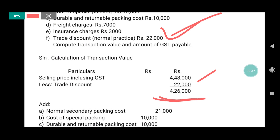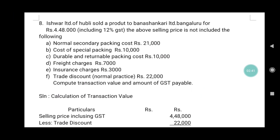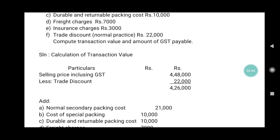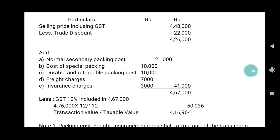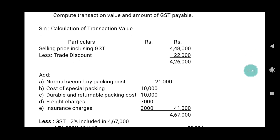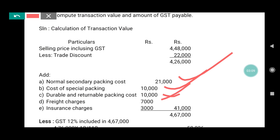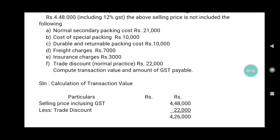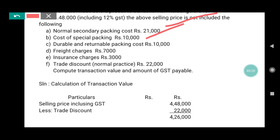These items were not included in the selling price, so we now need to add them to find the actual transaction value. We add: number one, normal package cost ₹21,000; number two, special package cost ₹10,000; number three, durable and returnable packing cost ₹10,000; number four, freight charge; number five, insurance charge ₹3,000. So we add normal packing cost, special packing cost, durable and returnable packing cost, freight charge, and insurance charge.